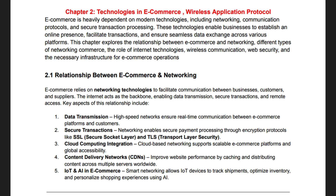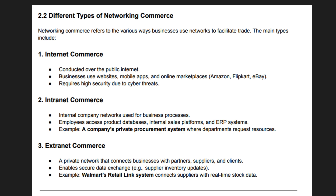Secure networking protocols such as HTTPS, VPNs, and firewalls protect sensitive business and customer data. Businesses use internet and intranet solutions for secure internal operations and B2B communication. Peer-to-peer networks enable decentralized transactions, commonly used in blockchain-based commerce. With 5G and fiber optic networks, e-commerce platforms can provide faster and more reliable services. Efficient networking infrastructure reduces downtime, enhances cybersecurity, and improves the customer experience.